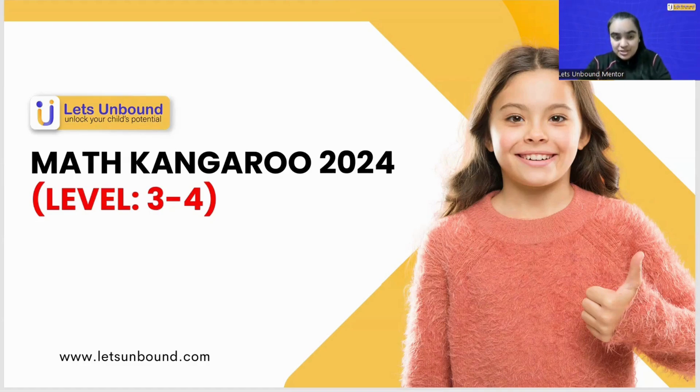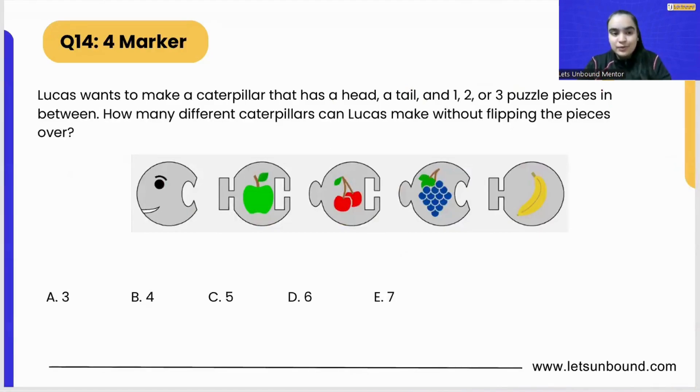It's a very interesting question, number 14. The question is: Lucas wants to make a caterpillar that has a head, a tail, and one, two, or three puzzle pieces in between. How many different caterpillars can Lucas make without flipping the pieces over? So we cannot flip it over, we cannot make any mirror images, we cannot rotate the pieces any which ways. We just need to combine them together so that we are having a unique caterpillar.